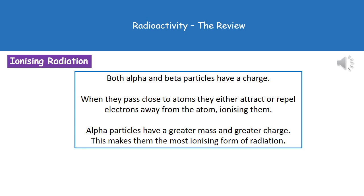If we think about the alpha and beta particles now, we know that they have a charge. So alpha has the positive charge and beta the negative charge. When those particles pass close to atoms, they're going to either attract or repel electrons away from the atom, meaning they become ionized. The reason that our alpha particles are the most ionizing form of radiation is because they've got this greater mass and greater charge than any of the other forms, which means that they've got a much greater ability to actually affect the electrons in those atoms. Therefore they will ionize them much more readily than the other forms of radiation.